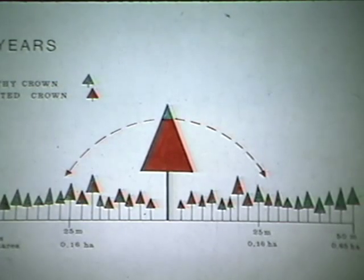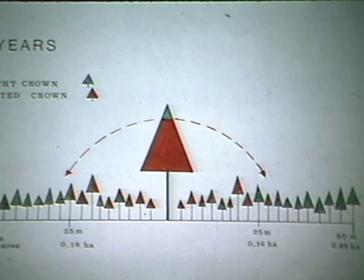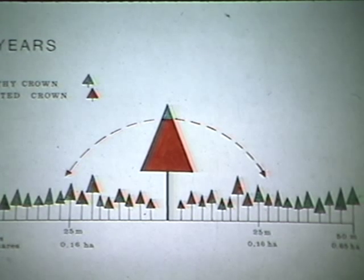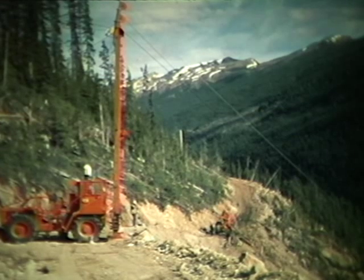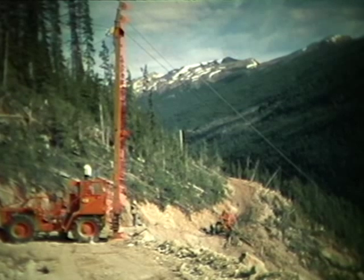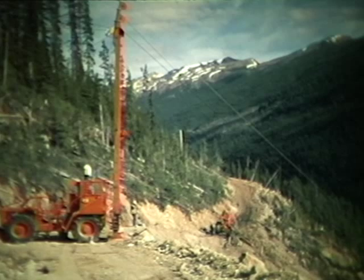It spreads slowly and is restricted to a limited number of tree species. As it depends on living trees for survival, its spread can be controlled once the host is killed. Therefore, through good forestry management, losses can be greatly reduced. We eventually hope to see the reduction of dwarf mistletoe to the point where it no longer causes significant forest damage.